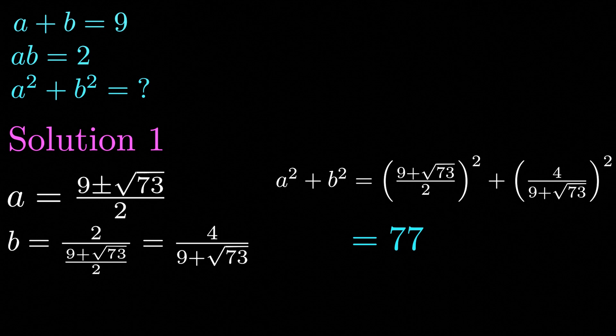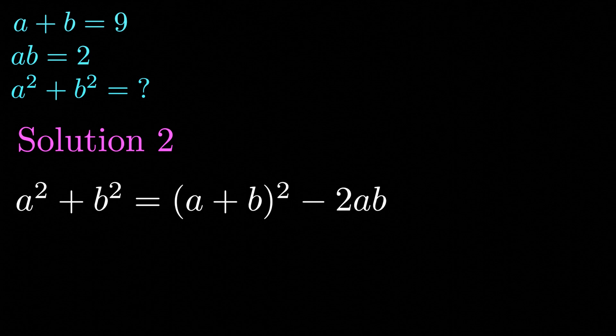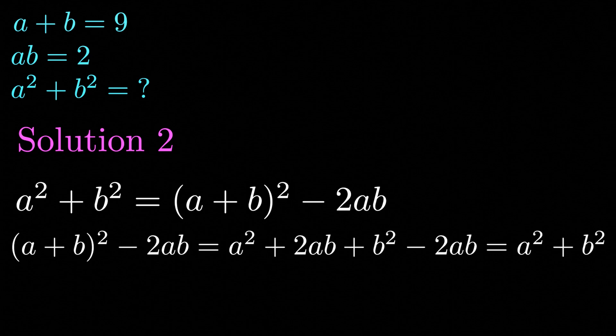Let's move on to solution two now. Solution two essentially hinges on us being able to rewrite a squared plus b squared as a plus b squared minus 2ab. Now try to think about why this is true. Well if we expand a plus b all squared we get a squared plus 2ab plus b squared minus 2ab.